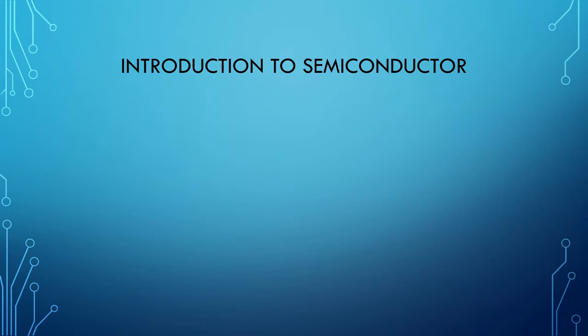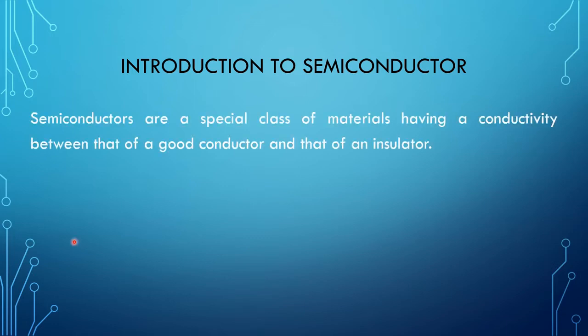Our first topic is Introduction to Semiconductor — that means, what is a Semiconductor? Semiconductors are a special class of materials having a conductivity between that of a good conductor and that of an insulator. A good conductor can conduct current heavily through it, while no current will flow through an insulator. So a semiconductor lies in between a good conductor and an insulator, meaning a moderate current flows through the semiconductor.